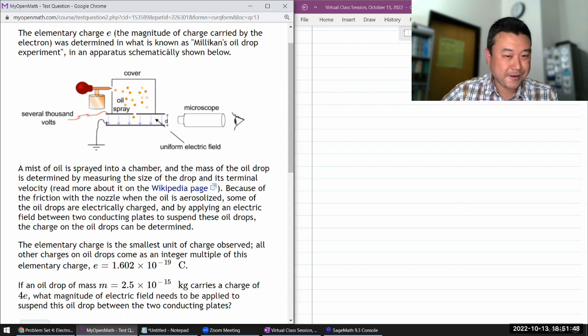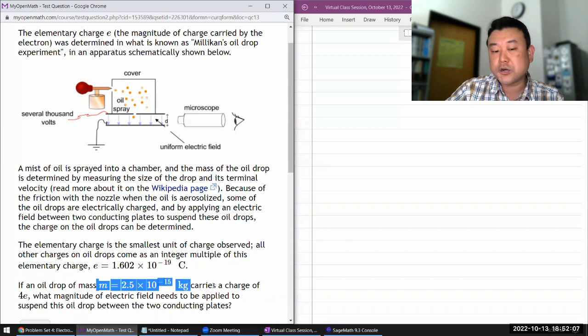So the elementary charge E was determined in this setup. Mist of oil is sprayed. Mass of the oil drop is determined by measuring size of the drop and its terminal velocity. There's a whole process. What we'll be given for our calculation is that we somehow know the mass of the oil drop.